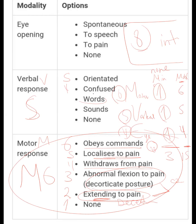If the patient says inappropriate words like 'hotel', 'home', 'house', they will score three. If they make incomprehensible sounds like groaning, they score two. And if there is no verbal response, they take one.